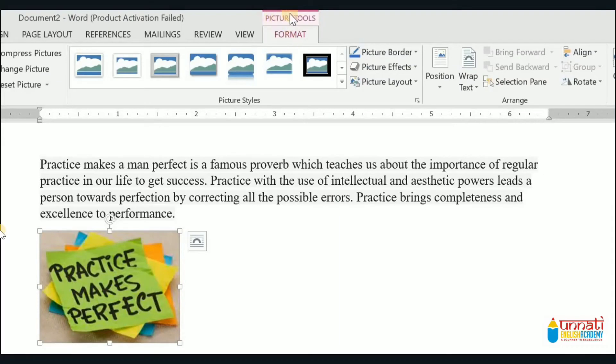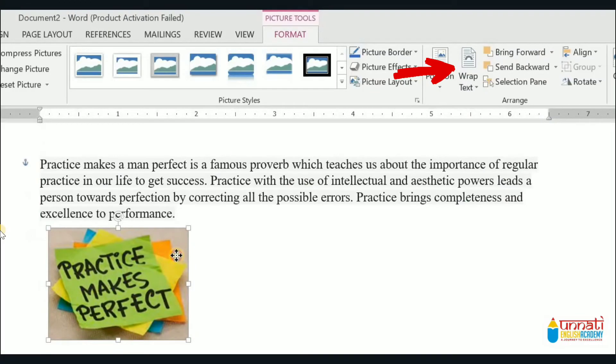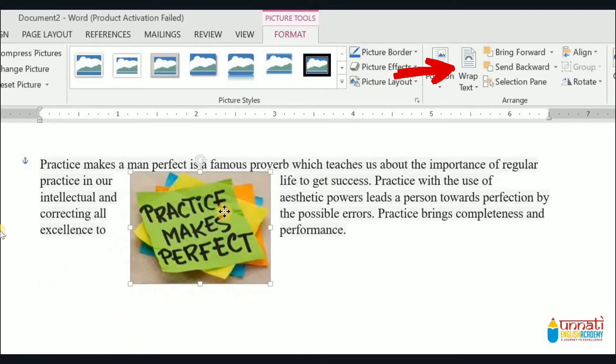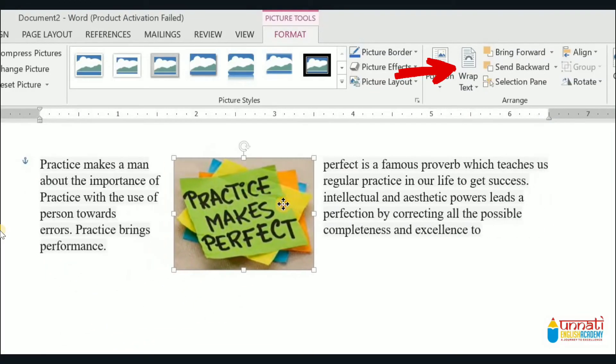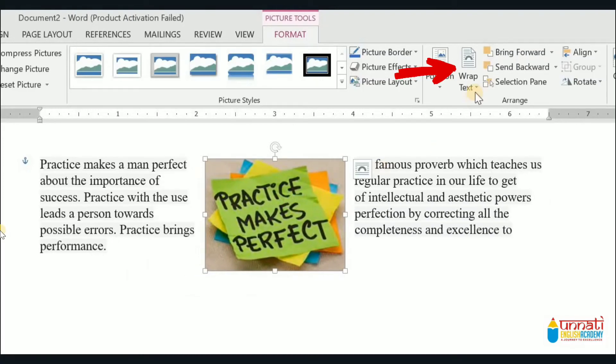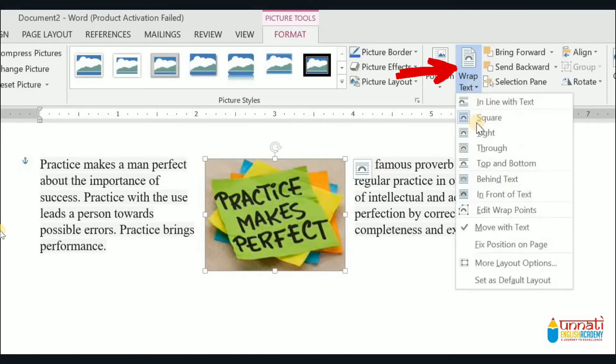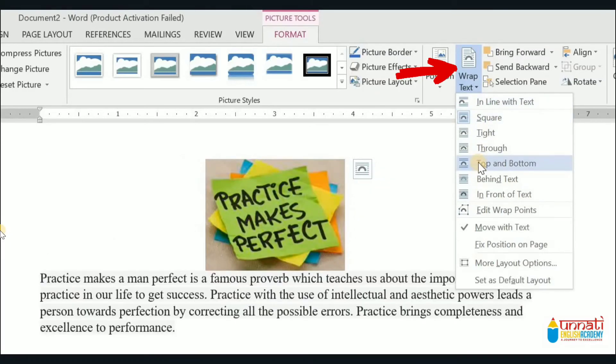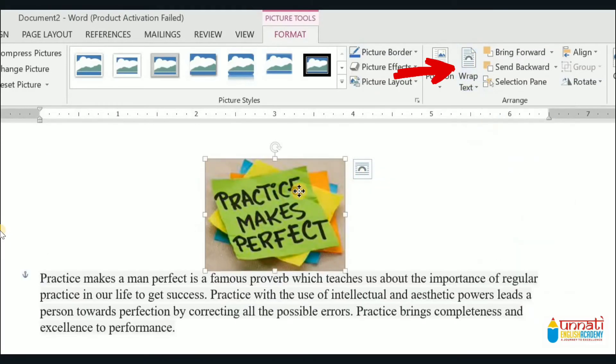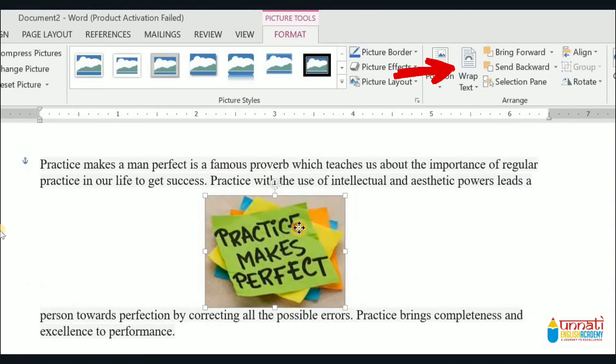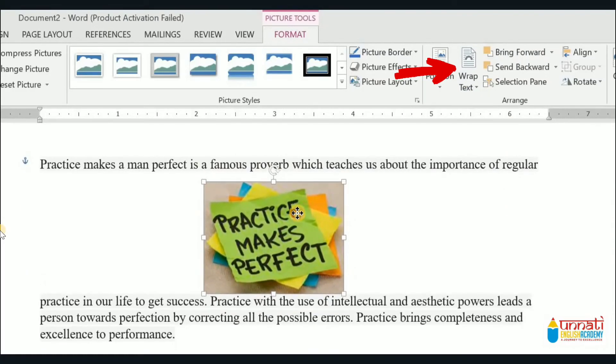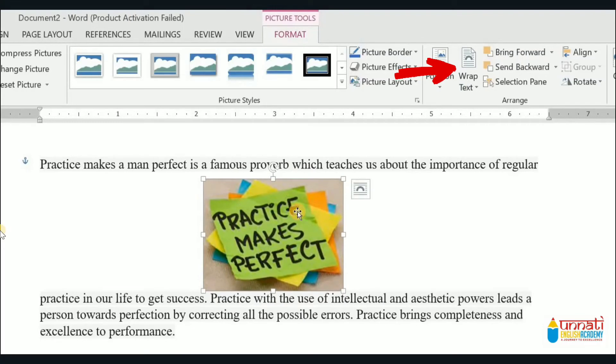Now in the Arrange group, click the Wrap Text command. There are many wrapping options available. When you hover over various text wrapping options, a live preview of the text wrapping will appear in the document. Select the desired option. The text will wrap around the image as per your selection. If you want to move the image, click and drag the image to the desired location.